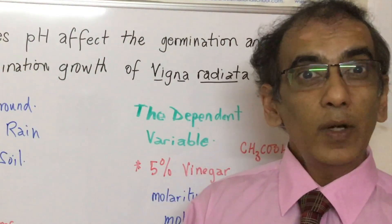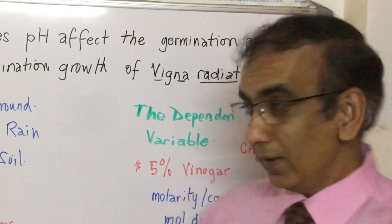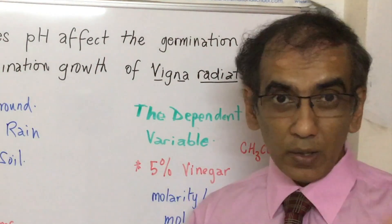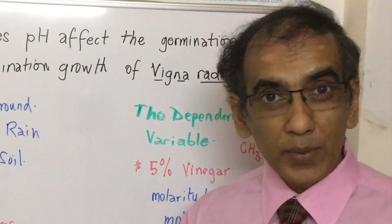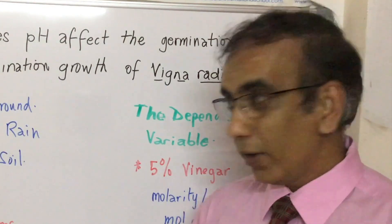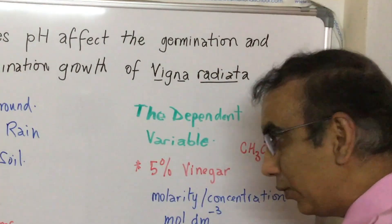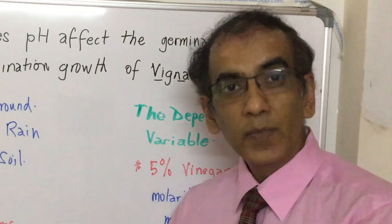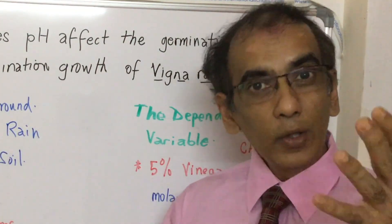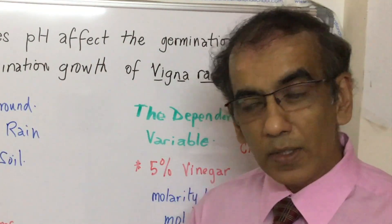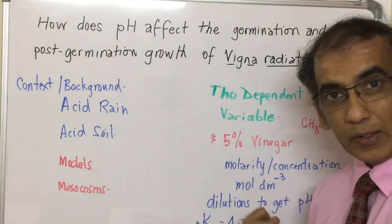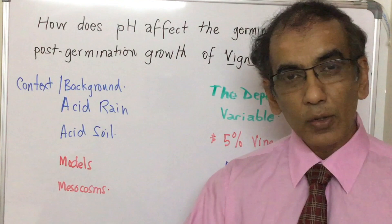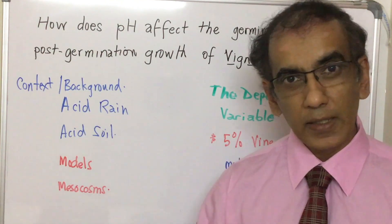Now you have a range of concentrations — but what pH do you have exactly? That's where you need the chemistry calculations, because you don't have access to a pH meter at home. The good news for biology and ESS students is that I have already done these calculations and will be sharing the pHs that correspond to all of these dilutions.